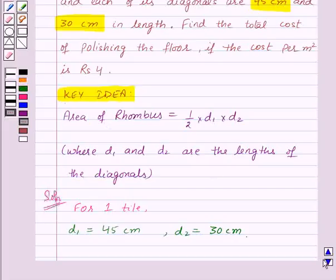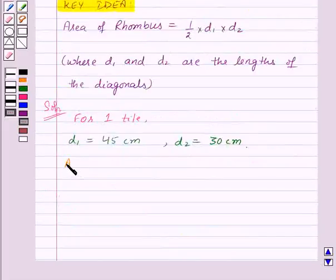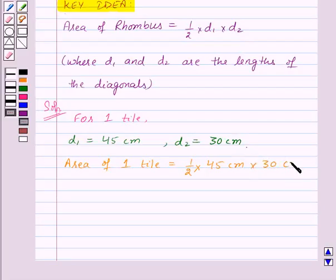Therefore, area of one tile is equal to 1/2 × d₁, that is 45 centimeters, × d₂, that is 30 centimeters. Now here, 2 and 30 will get cancelled by the common factor 2. And on simplifying this, we will get 675 centimeters squared.